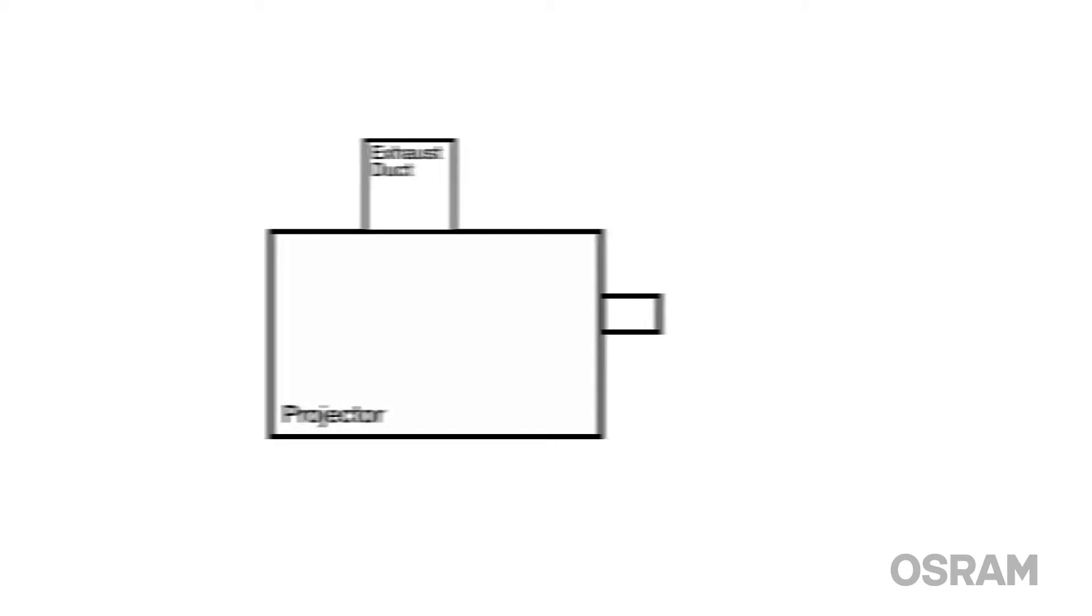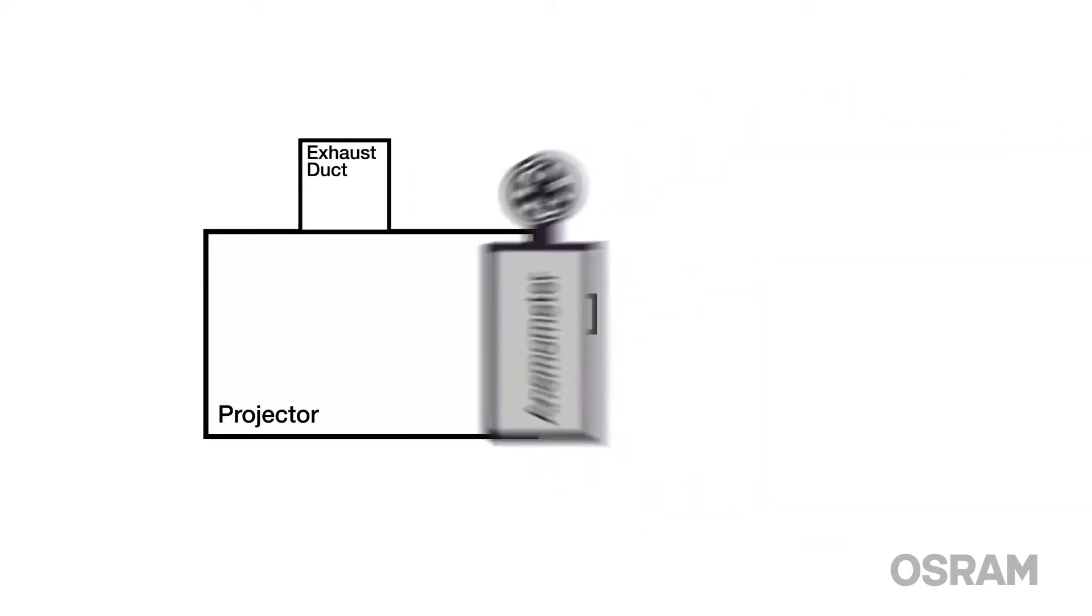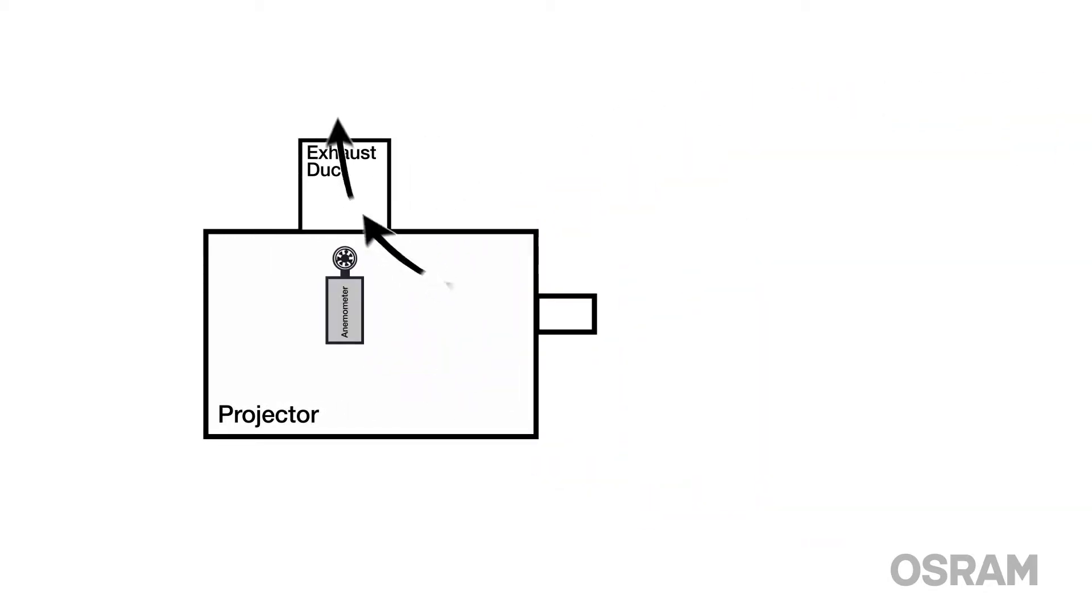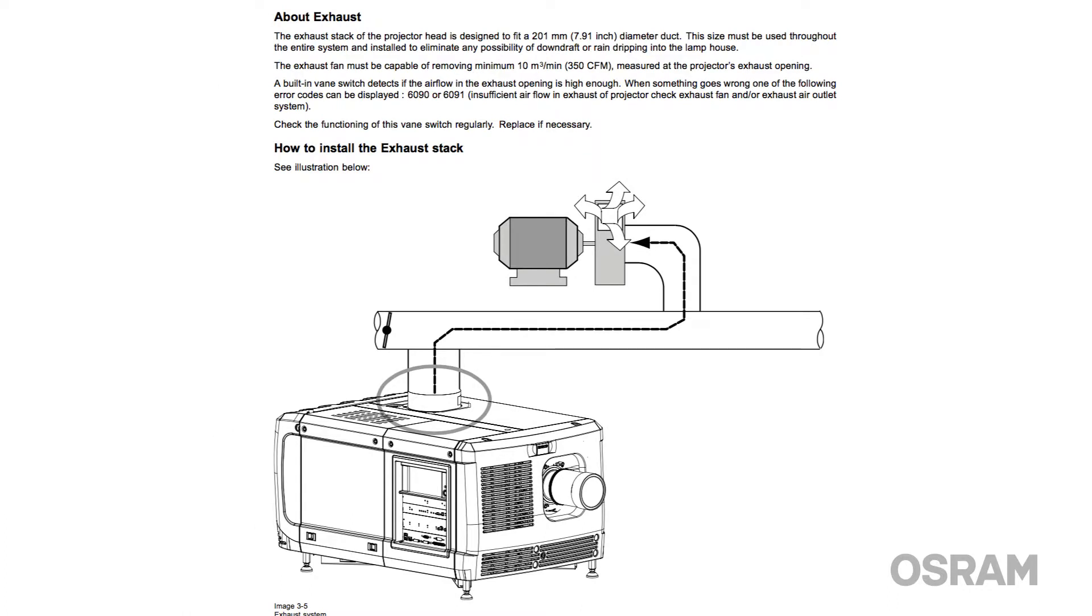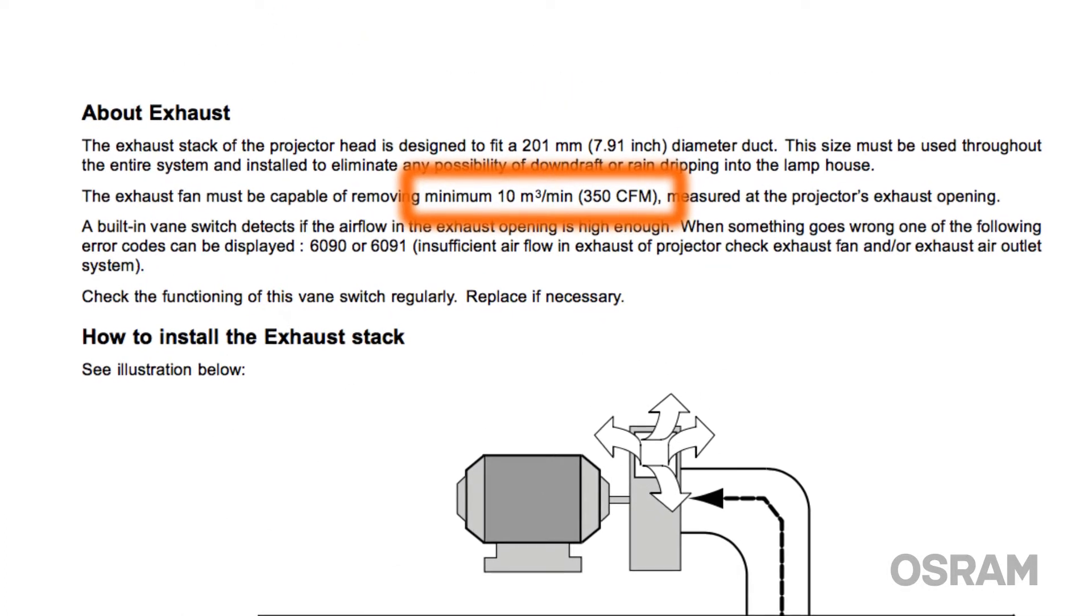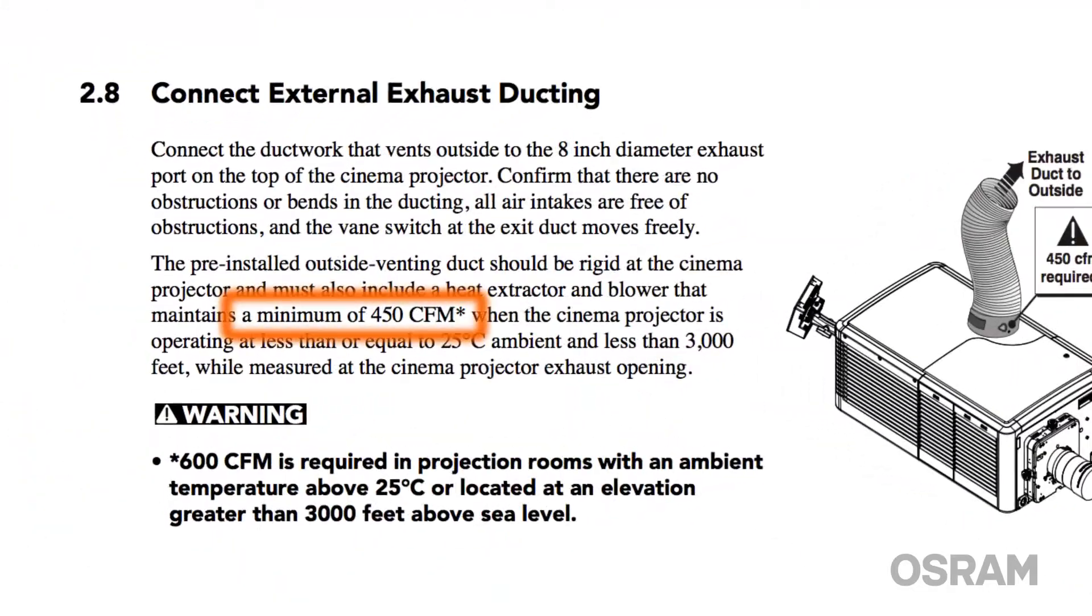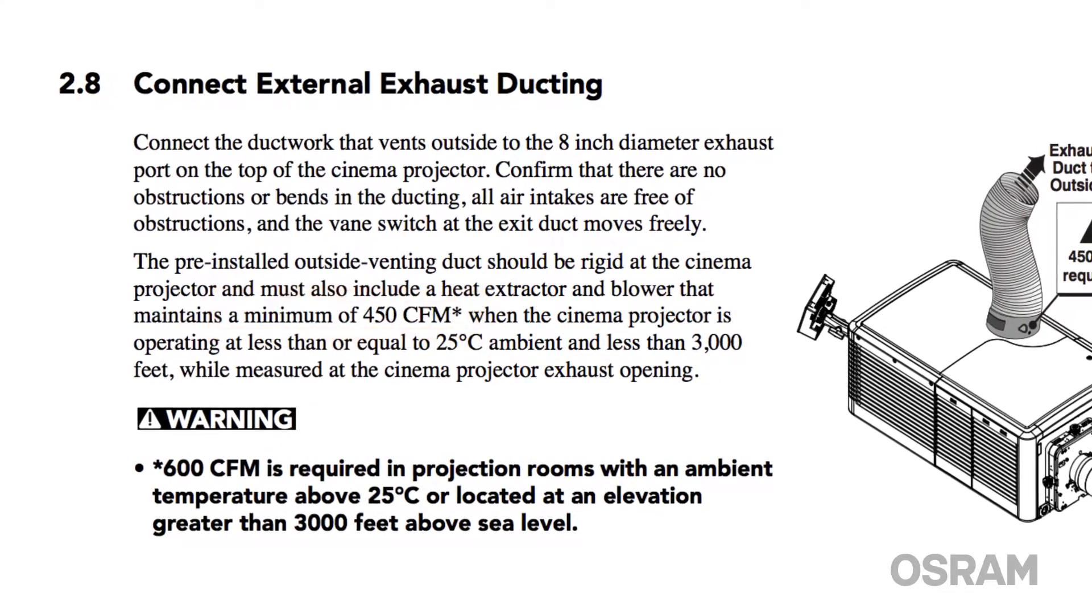Next, we need to see if the extraction is moving the hot air at the correct volumes and speeds to cool the lamp. The use of an anemometer is needed in order to take these measurements. Each projector brand and model will have different specifications and the appropriate installation or service manual should be used to find the correct range.